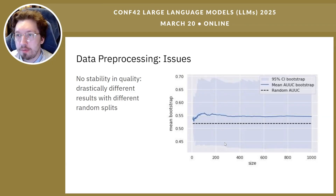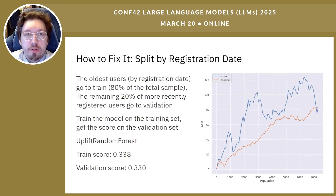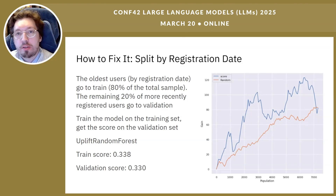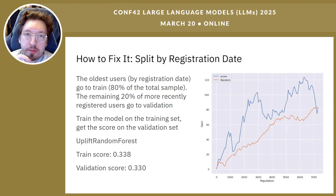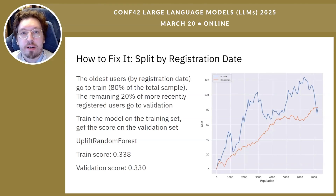The 95% confidence interval from bootstrapping remained stably high. Our solution was to split by user registration date: we put the more experienced, older users into the training set and the newest users into the test set. This also nicely mirrors how the model handles production, since the model will predict for new arrivals. We used an 80/20 train-validation split and trained on uplifted random forests from the CausalML library.